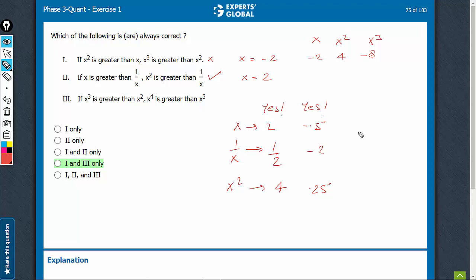Look at the third one now. When can x cubed be greater than x squared? Of course, in none of the negative cases, in none of the cases where x is between 0 and 1, this is possible only when x is positive and greater than 1.